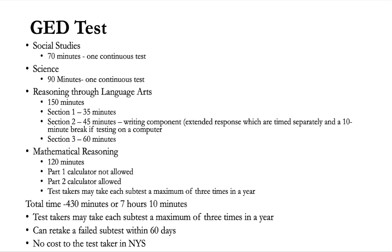The math portion, mathematical reasoning, is 120 minutes. Similar to the old TASC test, you have part one where you cannot use the calculator and part two where the calculator is allowed. The GED test will take you 430 minutes or 7 hours and 10 minutes to complete. You can only take the test three times in a year.